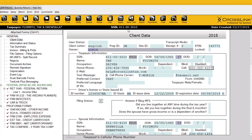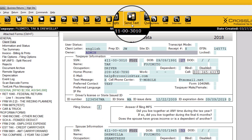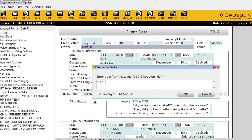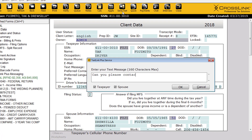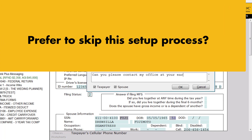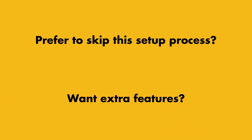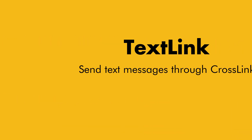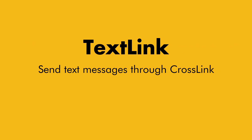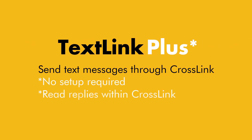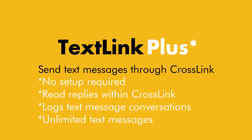With only a minimal amount of configuration work, you can set up your Crosslink desktop software to send text messages to your customer's mobile phone. If you prefer to skip the setup process and would benefit from a number of extra features, you'll want to contact your account manager to discuss signing up for TextLink Plus, our more advanced texting service. TextLink Plus is great if you're looking for the easiest and most feature-laden version of TextLink.